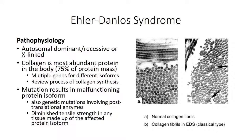The complexity of the condition is likely in part due to the complexity of collagen synthesis. As you've learned in biochemistry, there are multiple collagen isoforms that go through extensive post-translational modifications before being secreted into the extracellular matrix. Mutations to the collagen proteins themselves, or to any of the enzymes involved in collagen synthesis, would theoretically result in some form of Ehlers-Danlos Syndrome.